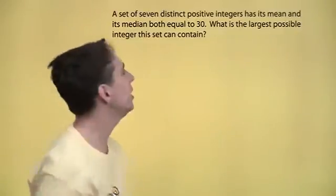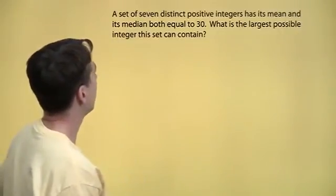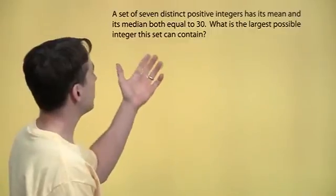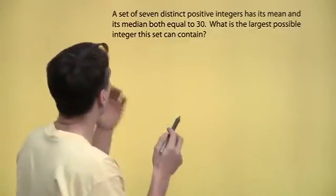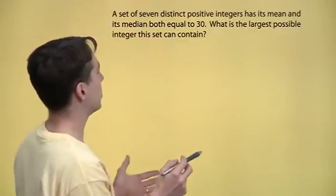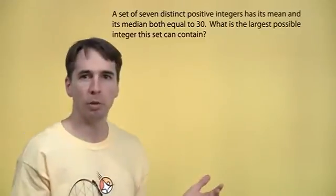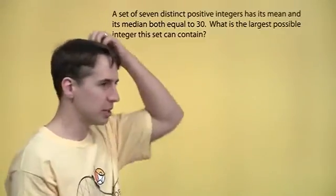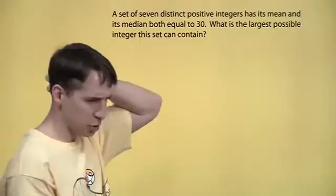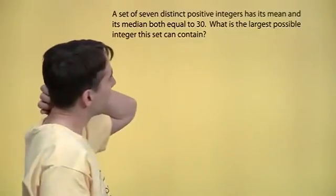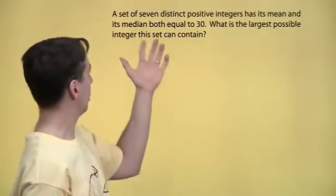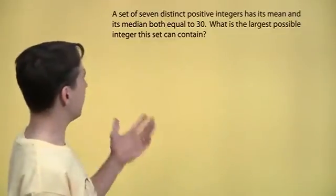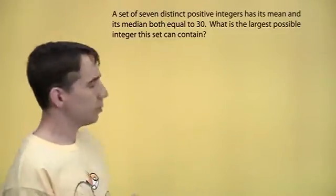What are we going to do here? Seven distinct positive integers. The mean and the median are both, they're not equally spaced this time. Can't use the same trick. Well, let's just, well, maybe we can still think about the middle. I mean, the median means the middle. We've got seven numbers.